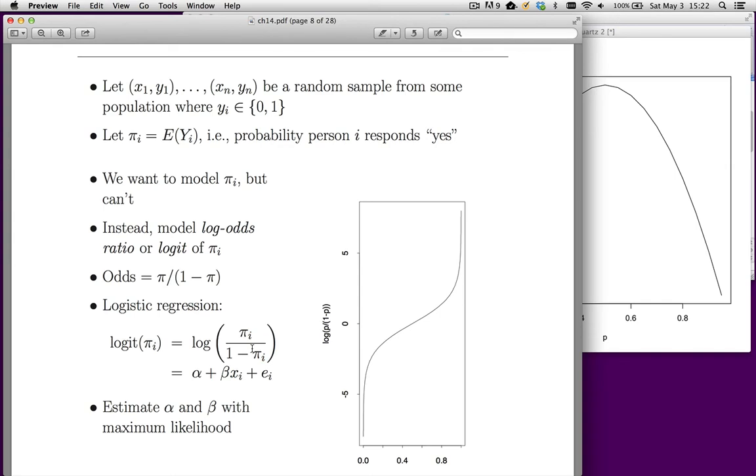Let's take apart this log odds ratio. Let's start with odds. So the odds of something occurring are just the ratio of the probability it happens to the probability it doesn't happen.